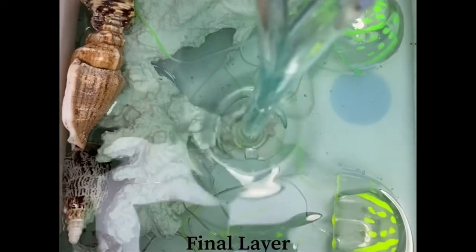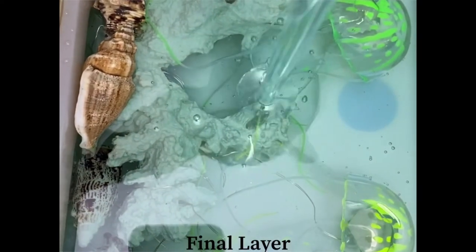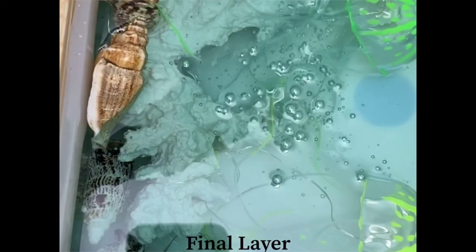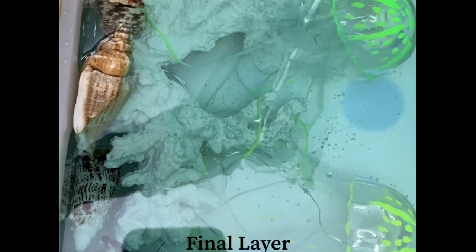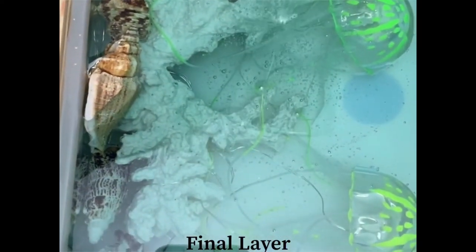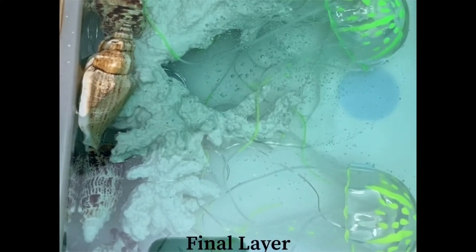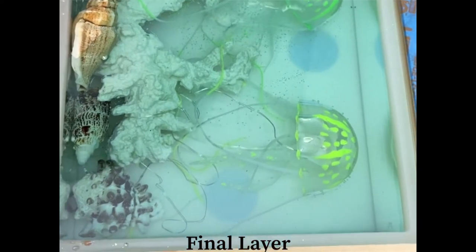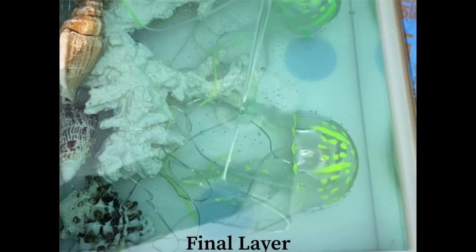Now it's time for the pour and this layer is going to cover up all the seashells that I added in between and my jellyfish. The mold I'm using is approximately nine inches wide and almost three inches thick. Squid 2.0 worked perfect for it.